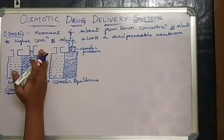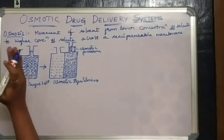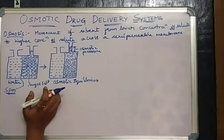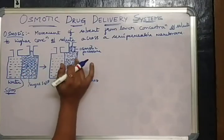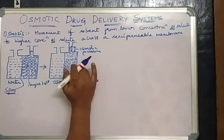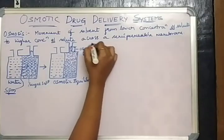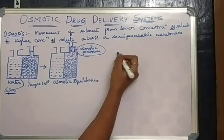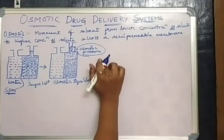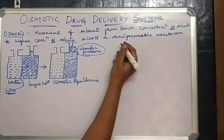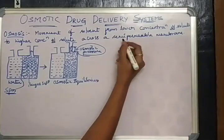The flow of water into the sugar solution was halted or stopped when a pressure P is applied to the sugar solution. That pressure P is called osmotic pressure. This osmotic pressure of sugar solution is directly proportional to solution concentration and absolute temperature.